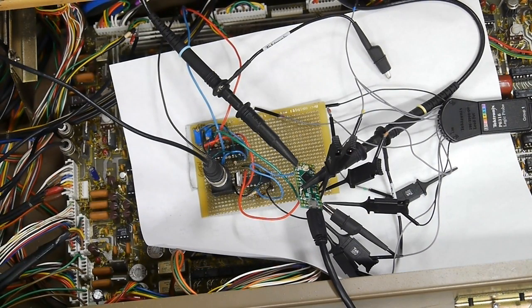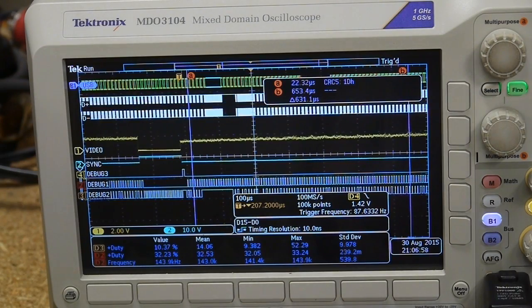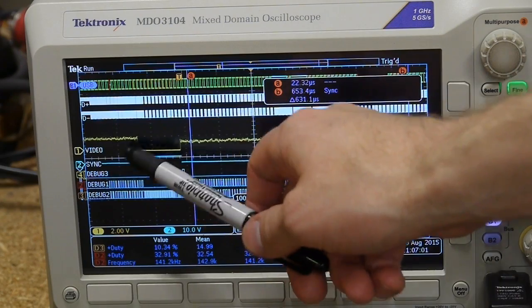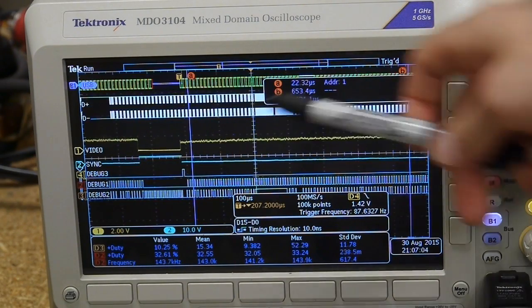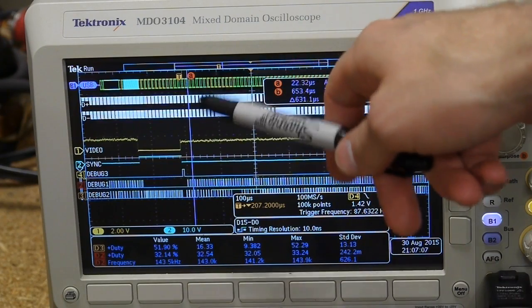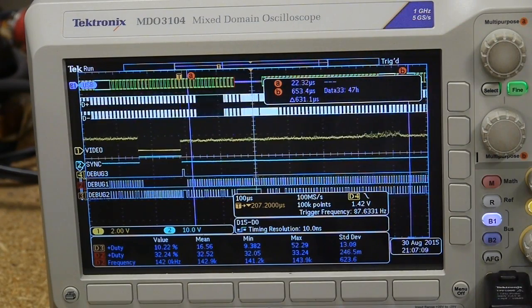Let's take a look at it on the scope. We can see everything on the oscilloscope. The two analog channels—video and sync—are the two analog inputs to the microcontroller.